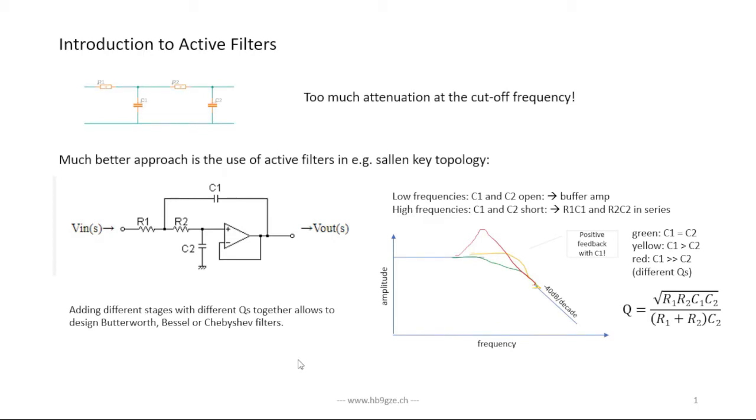Hello, this is Stefan again and we look at active filters in this video. Before we discussed passive filters and cascaded RC filters, and we found out that cascading RC filters is not such a good idea because it generates very high attenuation and shifts the cutoff frequency into lower frequency ranges. The reason is that the second RC stage is loading the first RC stage.